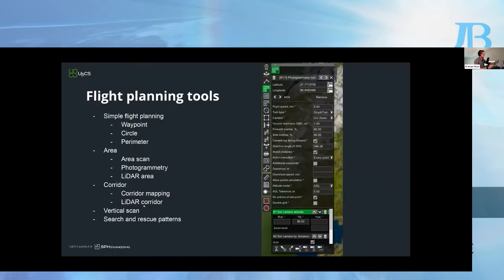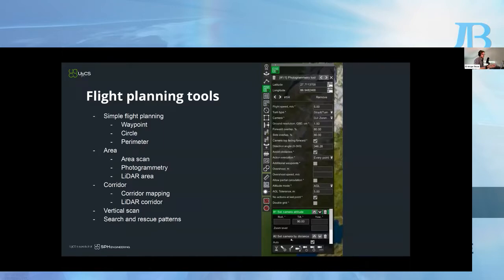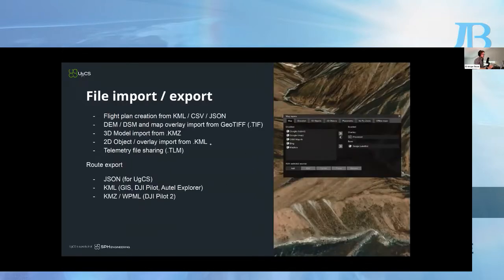We also have the vertical scan feature, allowing you to scan the facades of buildings, archways, dams, and structures such as telecommunication towers. To each flight planning tool you can add different actions — for the photogrammetry tool, for example, the 'set camera attitude' action changes the camera tilt 90 degrees downwards. The 'set camera by distance' action automatically calculates how often shots should be taken to maintain the set forward and side overlap values. You can also use 'set camera by time' instead.